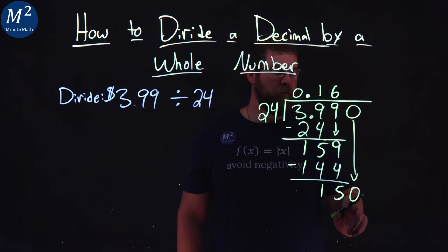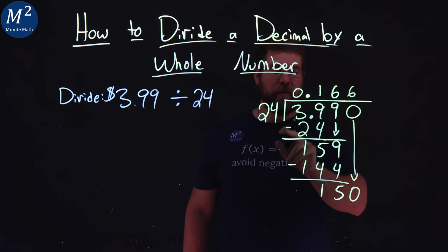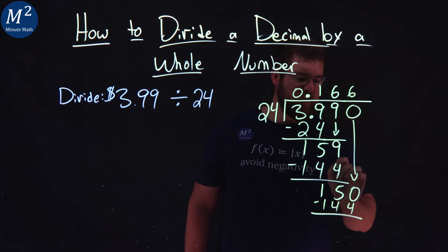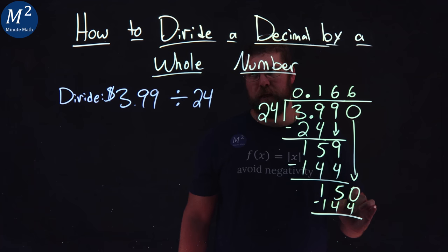Now, 24 can go into 150. We know 6 times again, because 6 times 24 is 144. Subtract the two numbers. Well, 0 minus 4, can't do that.